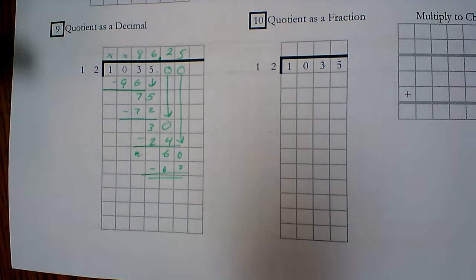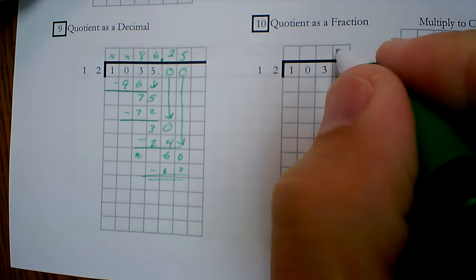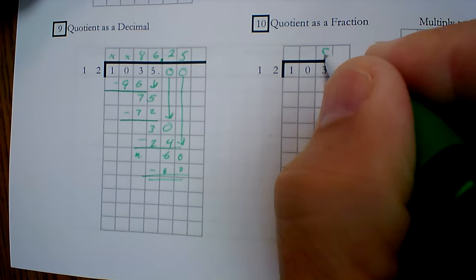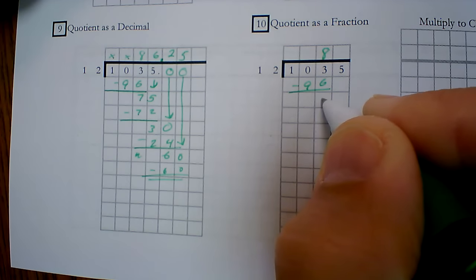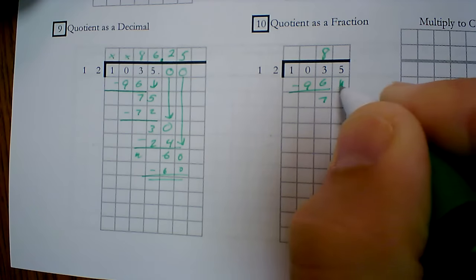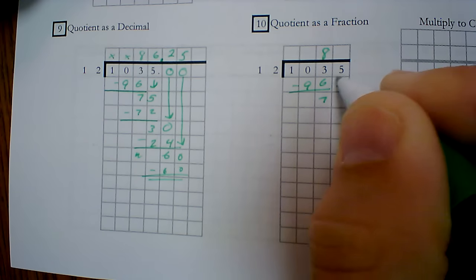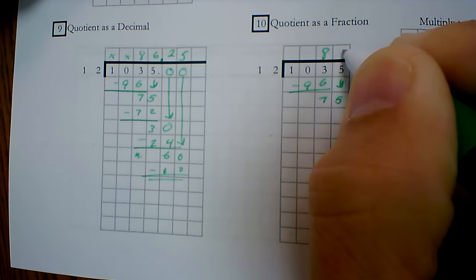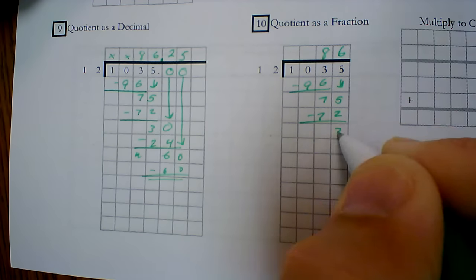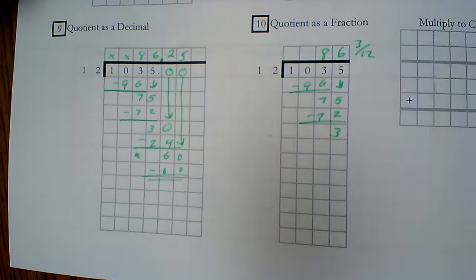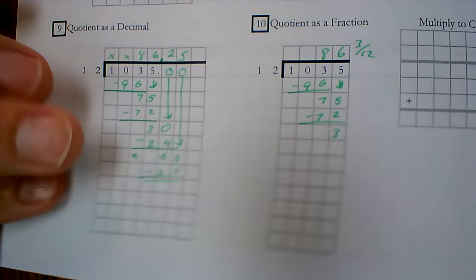Now let's do the same thing, only I want my answer as a fraction. What's left over in fraction form? 96. Subtract. I get 7. Bring down the 5. That is 6 groups. So 72. And 3. 12. 3 twelfths is the exact same thing as 25 hundredths. So I know I'm right.